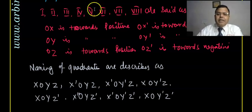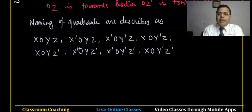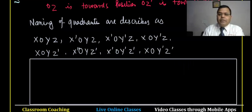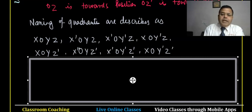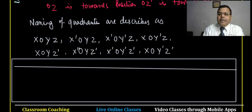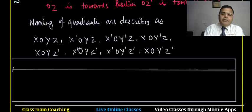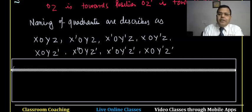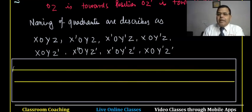Now let me draw a diagram so you can understand the sign convention in each octant. These are the eight octants and we will do the sign convention. The sign convention is listed for x-axis, y-axis, and z-axis for each quadrant, giving three coordinates per octant.